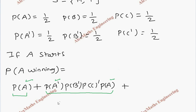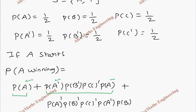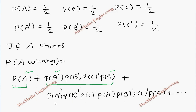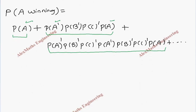So in the same way, again they start from the beginning: A does not win, B gets a chance and is not winning, C gets a chance and is not winning, again A gets a chance and he is not winning, again B not winning, C not winning, then A wins the game. So here A wins in the third round. Like this it goes indefinitely.